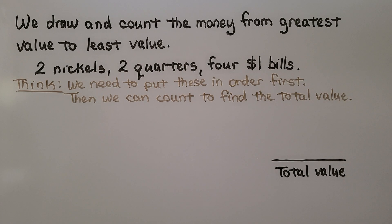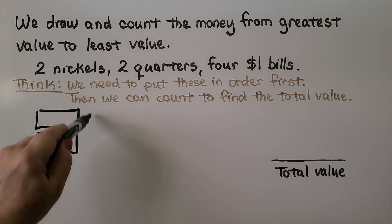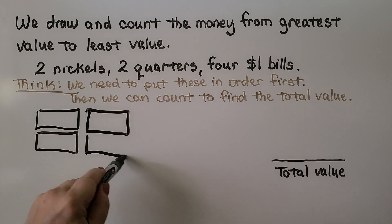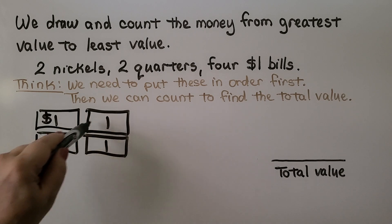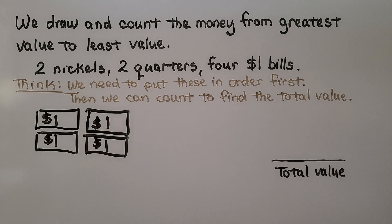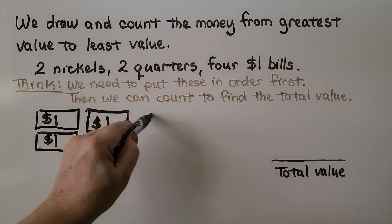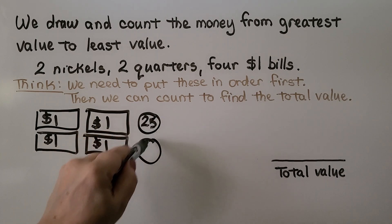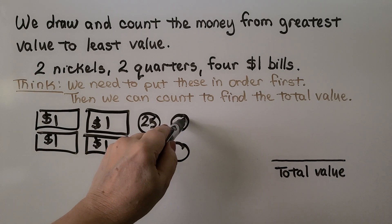We draw and count the money from greatest value to least value. Here it says two nickels, two quarters, and four one dollar bills. We know the one dollar bills are the greatest value, so we draw those first — four rectangles, writing a 1 inside each. The next greatest value would be quarters, so we draw two quarters with 25 inside, then two nickels worth five cents each.